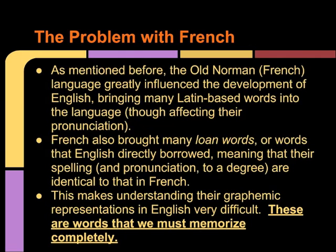Now let's come back to French for just a moment. The old Norman or French language greatly influenced the development of English, bringing many Latin-based words into the language, though sometimes affecting their pronunciation. French also brought many loan words — words that English directly borrowed — meaning that their spelling and pronunciation to a degree are identical to that in French. This makes understanding their graphemic representations in English very difficult. Often these are words that we just have to memorize.